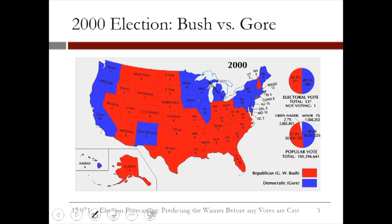Now, while it seems like a somewhat subtle distinction — the electoral college versus the simple popular vote model — it can have very significant consequences on the outcome of the election. As an example, let's look at the 2000 presidential election between George W. Bush and Al Gore.